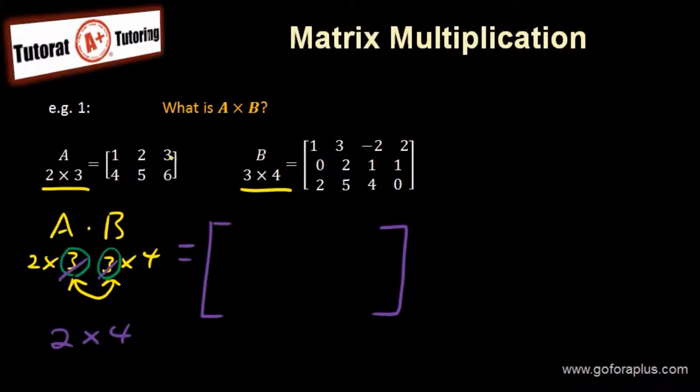The first row times first column, and then the first row times second column, then third column, then fourth column. Then we change row to the second row times each column.